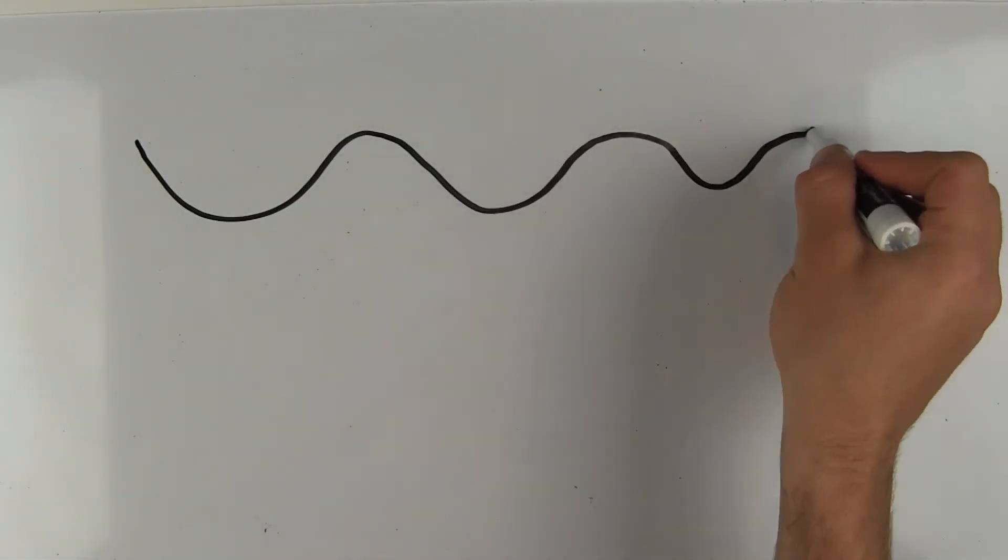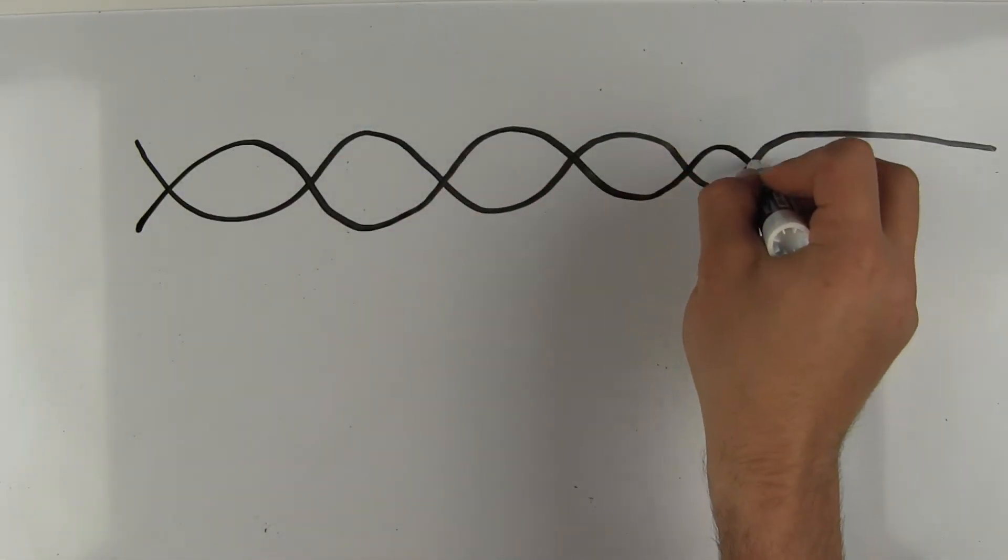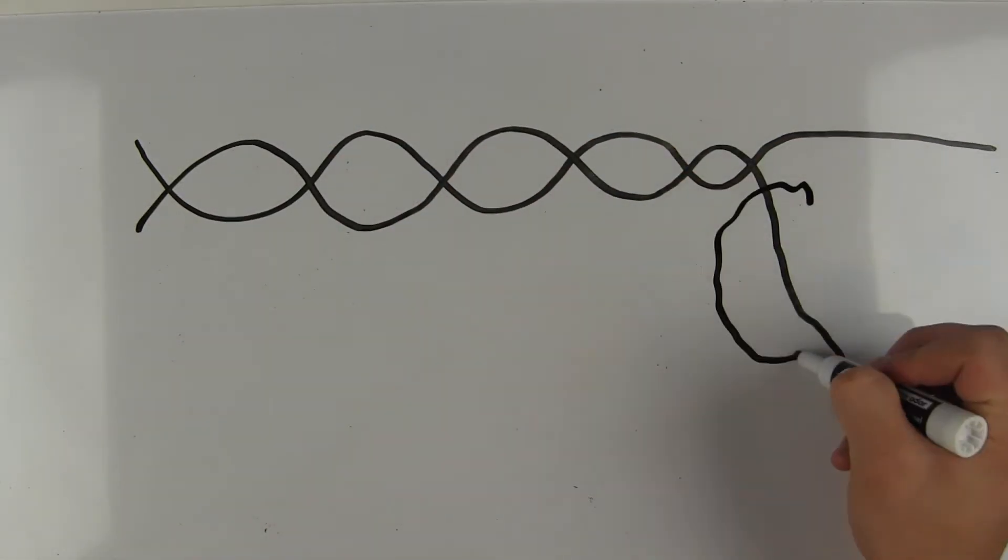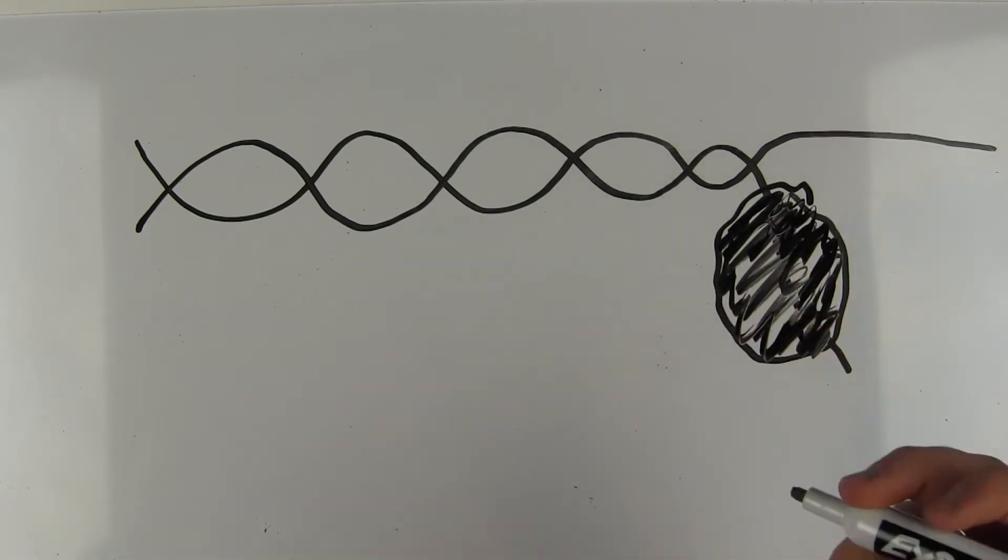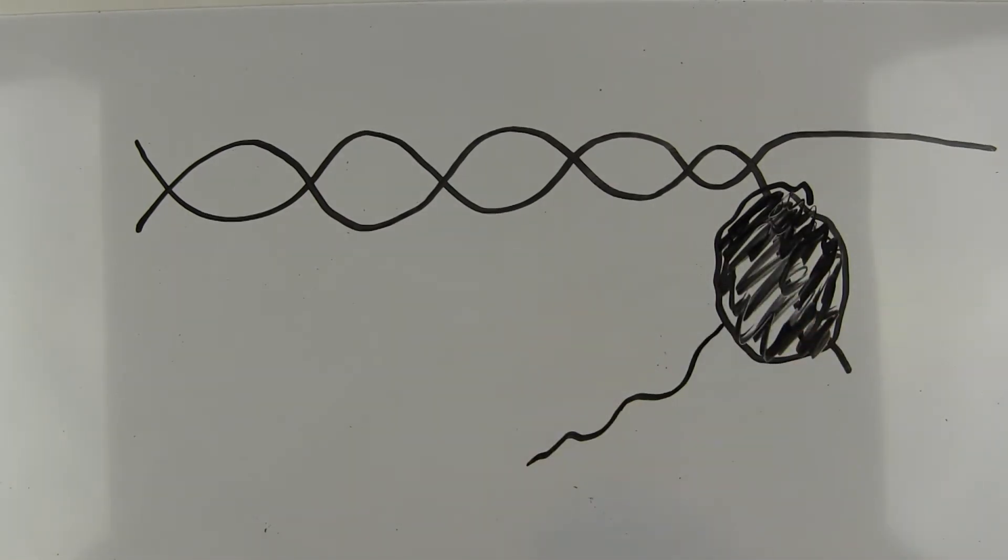So back to how DNA creates amino acids. There is a special particle that splits DNA in half and makes a copy of one side of the DNA. The copy is then called RNA.